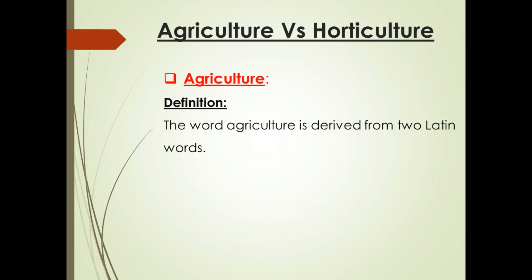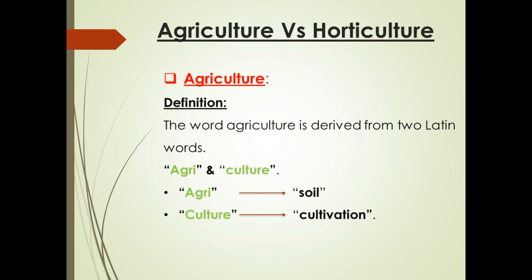Agriculture. The word agriculture is derived from two Latin words, agri and culture. Agri means soil and culture means cultivation.